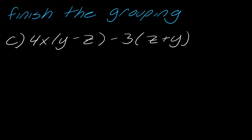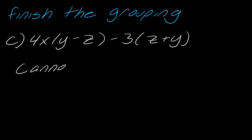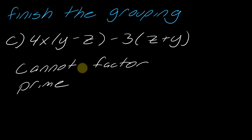Maybe pause and think about this next one, then hit play when you're ready. Notice for this one I've got y minus z and then z plus y. These are not equivalent — the minus sign actually makes these two different values, so we cannot factor any farther. In this case we cannot factor, so as far as we know it's probably prime. I'll show you an example in a few minutes where this isn't always the case, but for now we'll say that this is prime.